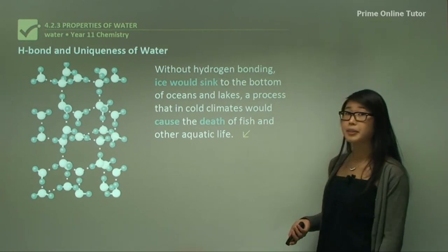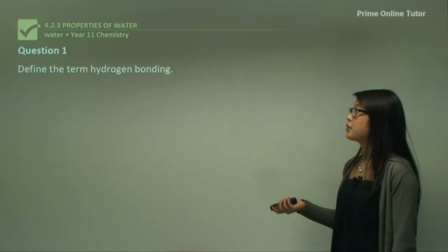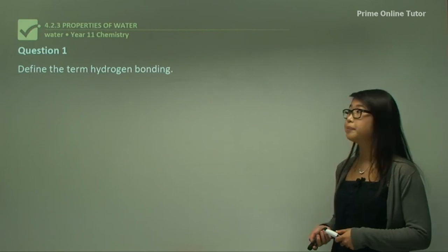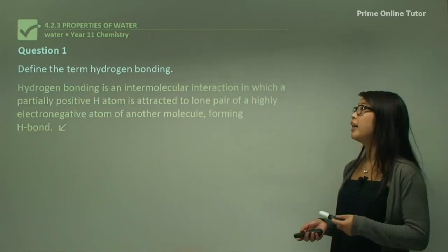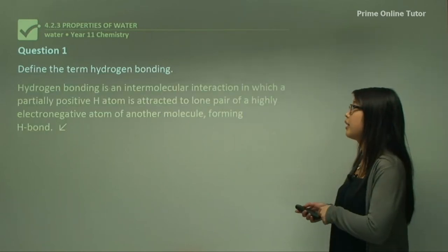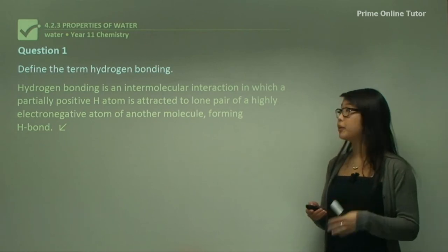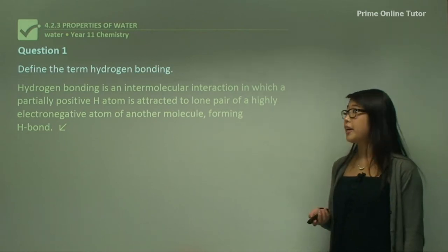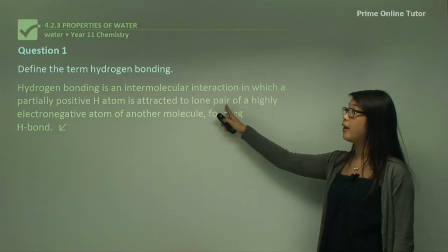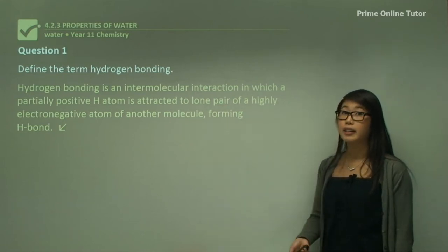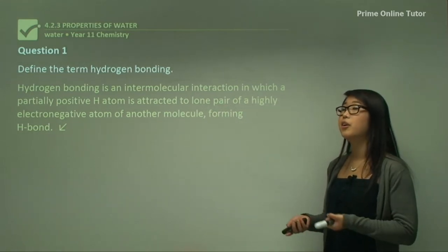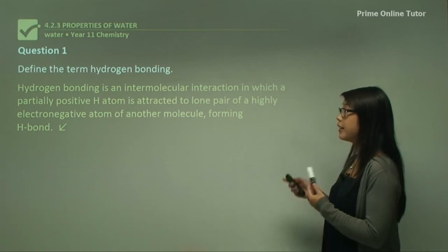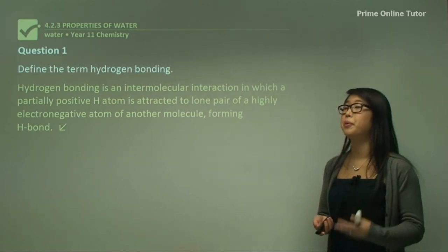Now we can look at some questions. Question one: define the term hydrogen bonding. Hydrogen bonding is an intermolecular interaction between molecules in which a partially positive hydrogen atom is attracted to the lone pair of a highly electronegative atom — nitrogen, fluorine, or oxygen — in another molecule. This attraction forms the hydrogen bond.